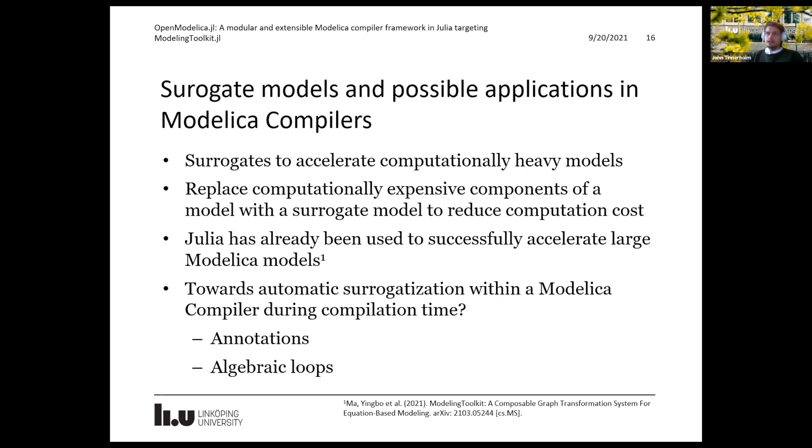There have been examples using MTK that illustrate how to accelerate models by employing surrogates. For instance, the heating, ventilation and air conditioning model claiming a 590x speed up compared to Dymola. So we ask ourselves, is it possible to use the components within the Julia ecosystem to do compile time surrogates? Is it possible to introduce annotations into Modelica to do this? And we will present a brief experiment where we replaced a non-linear algebraic loop with a surrogate generated using a simple neural network. Although this is an artificial example, it demonstrates that there are possible gains to be had here and maybe an area for future research.